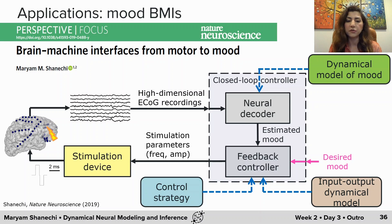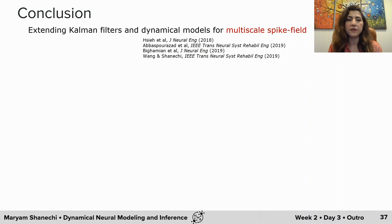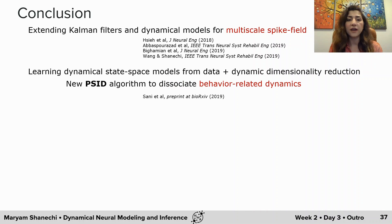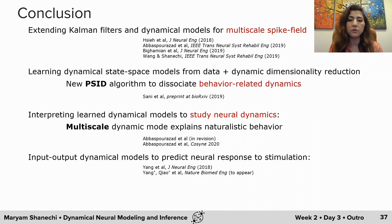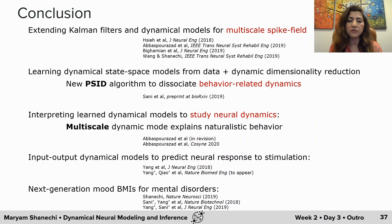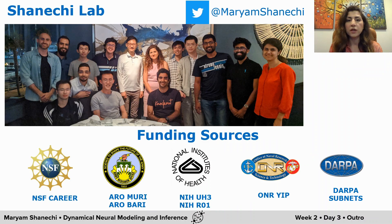In conclusion, I talked about extending Kalman filters and dynamical models for multi-scale signals; learning dynamic latent state-space models and dynamic dimensionality reduction to extract behaviorally relevant neural dynamics; interpreting these dynamical models in terms of multi-scale dynamical modes; extending them to describe the effect of external electrical stimulation input; and developing a next generation of mood BMI for mental disorders. I'd like to thank the lab members whose work I presented, as well as the funding sources. Thank you for your attention.